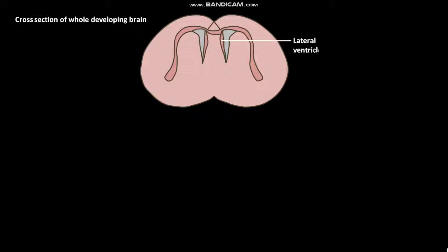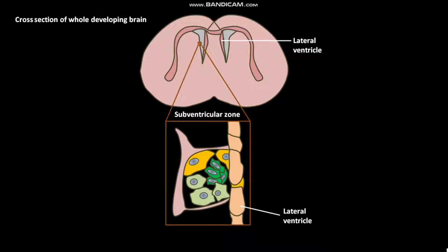This is the cross section of a whole developing brain of a mammal. This cross section shows the lateral ventricle, which is a fluid-filled space inside the neural tube. The area just surrounding the ventricle is called the subventricular zone.